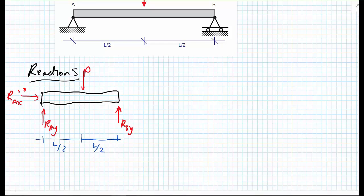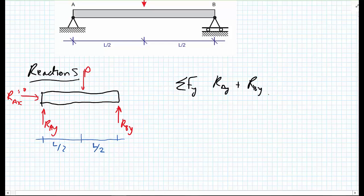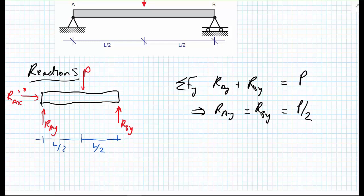To get our support reactions, we sum forces in the Y direction. So we have R_AY plus R_BY equals P. Two unknowns, one equation. However, using moments, or the fact that the beam is symmetrical, we can quickly realize that R_AY equals R_BY, which equals P upon 2. So now we have the reactions and we can proceed to write our bending moment equations.